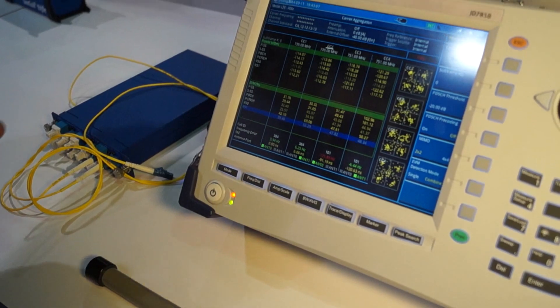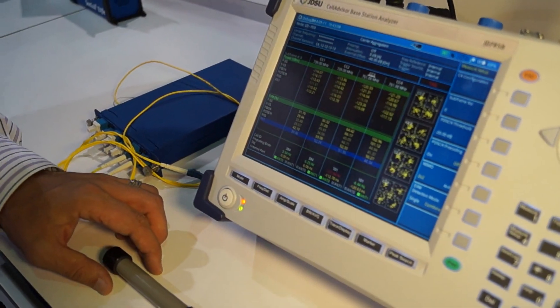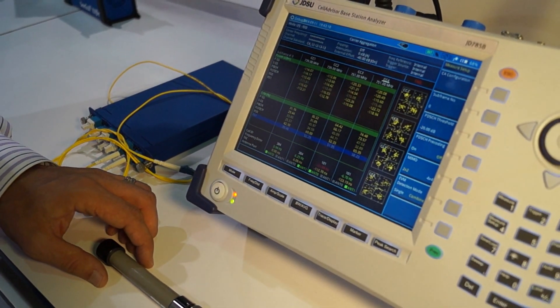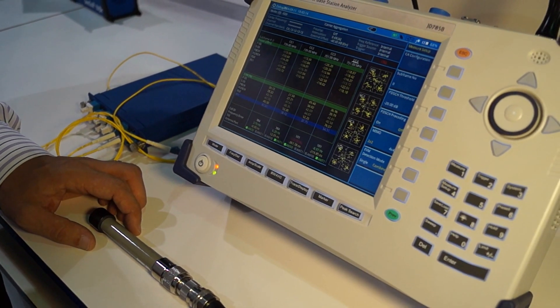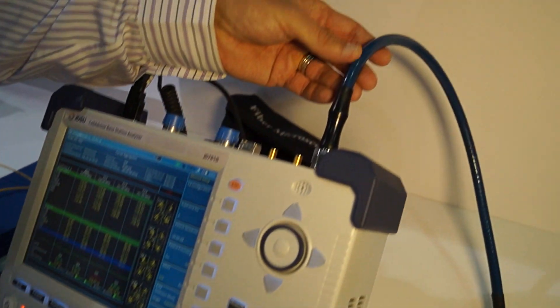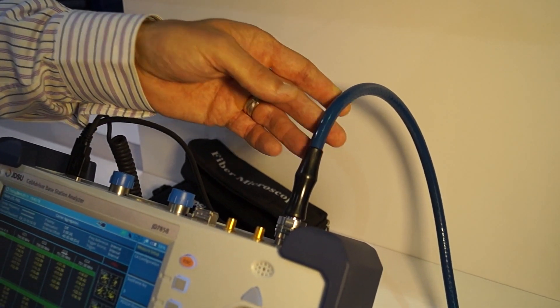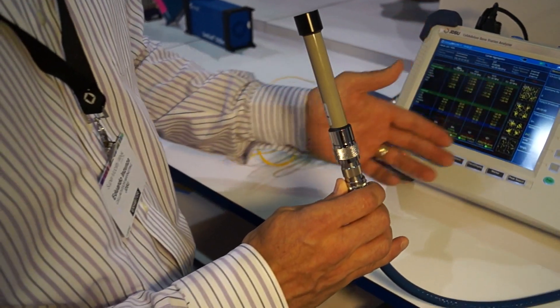Basically, traditionally with old or conventional cell sites, all the tests, mainly as an example for interference analysis, was made through coax. So as an example, here I have a coax connected to an antenna and doing some testing.